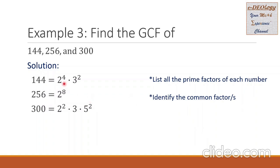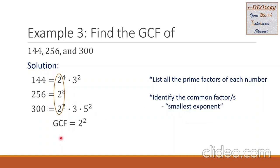We can see that the factor 2 is common, but we have different exponents. In this case, we are going to use the one with the smallest exponent. Therefore, the GCF equals 2 squared. We simplify this into 4, and this is the greatest common factor.